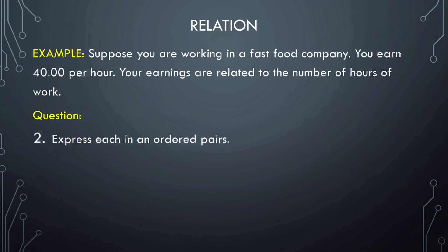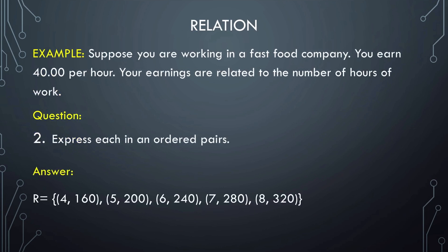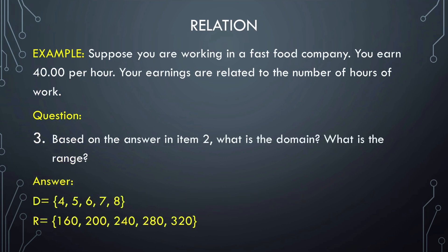Next, express each in ordered pairs. The X values are the number of hours of work, while the Y values are your earnings. So the answer is the set: (4, 160), (5, 200), (6, 240), (7, 280), and (8, 320). Based on this, the domain is {4, 5, 6, 7, 8} and the range is {160, 200, 240, 280, 320}.